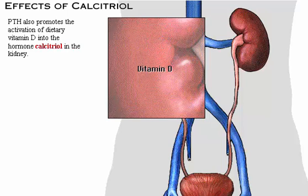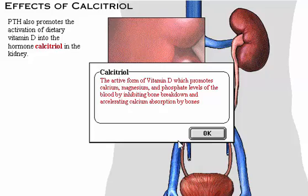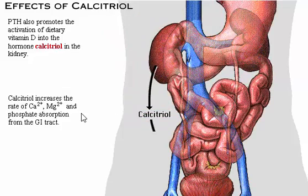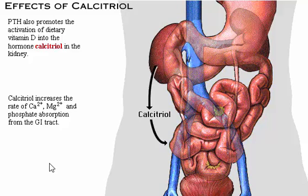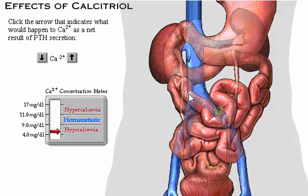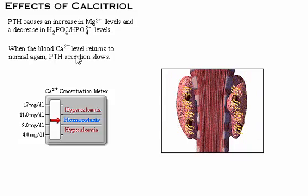Parathyroid hormone also promotes the activation of dietary vitamin D into the hormone calcitriol in the kidney, with the liver also involved in vitamin D activation. Calcitriol increases the rate of calcium ion and phosphate absorption from the gastrointestinal tract. As a net result of parathyroid hormone secretion, plasma levels of calcium increase to normal. When plasma calcium returns to normal, parathyroid hormone secretion slows — the final step in this negative feedback loop.